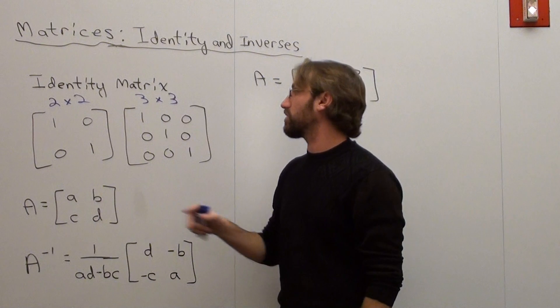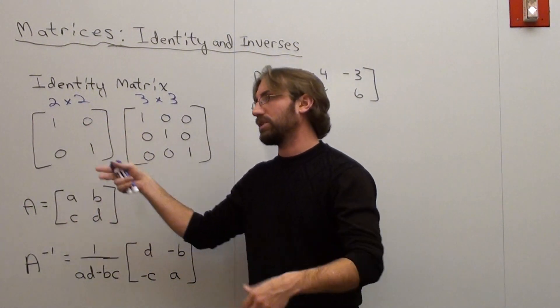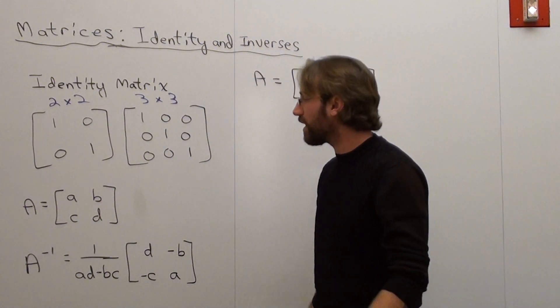Identity matrix can only be a square matrix too. It can't be 2x1, it has to be 2x2, 3x3, 4x4, 5x5.